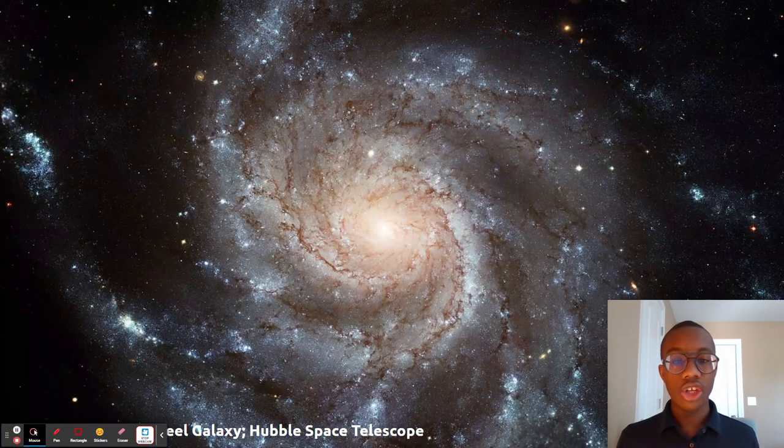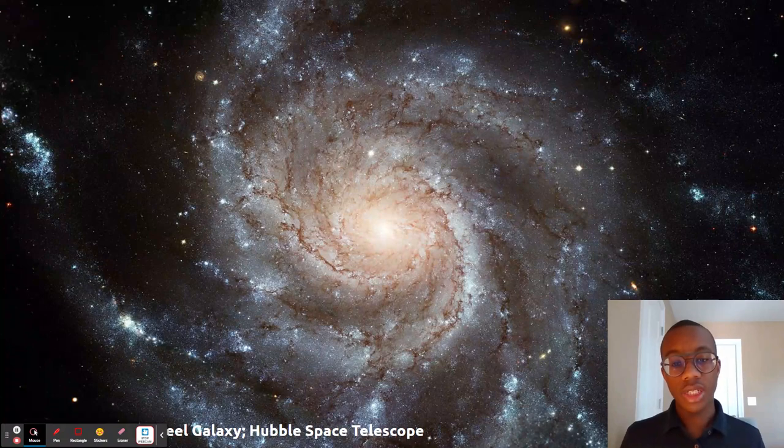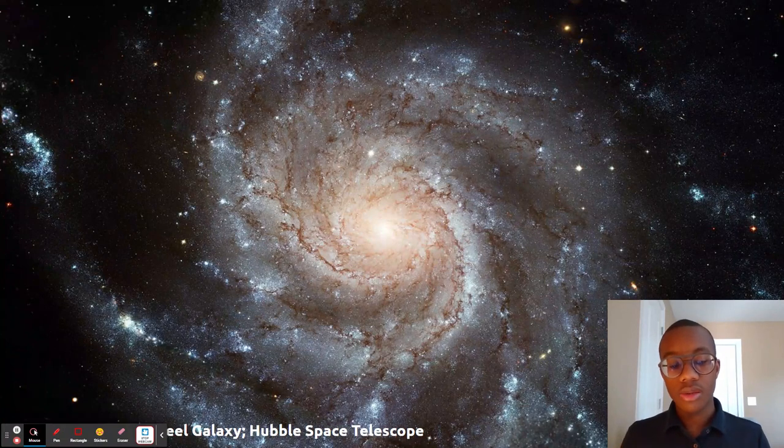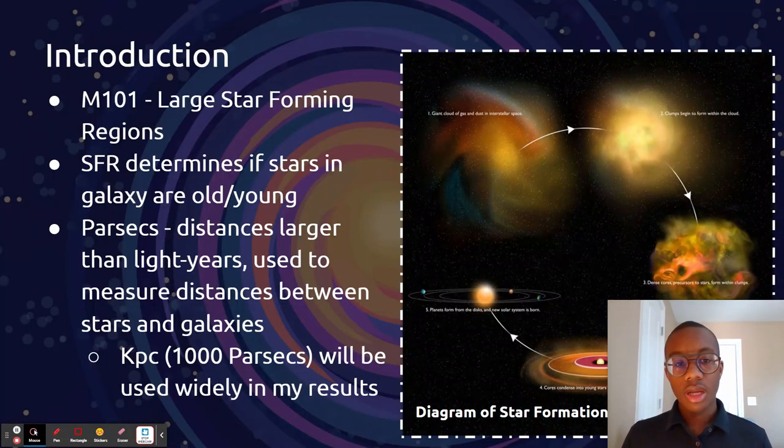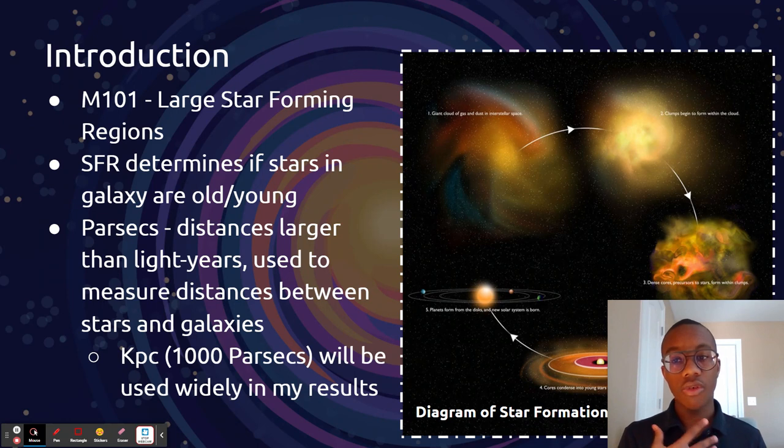This is the one I'm looking at. You can see where the stuff is and where the stuff isn't. Higher densities and lower densities, spiral arms in the nucleus. This galaxy I'm looking at, known as the Pinwheel Galaxy or M101, has large star forming regions. Star formation rate determines if galaxies are older or young.